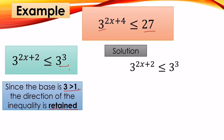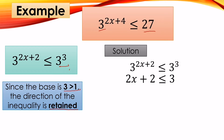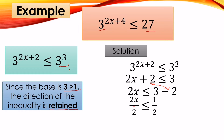We equate the exponents: 2x + 2 ≤ 3. Then we move positive 2 to the other side, making it negative 2: 2x ≤ 3 − 2, so 2x ≤ 1. Divide both sides by 2: x ≤ 1/2. So the answer is x ≤ 1/2.